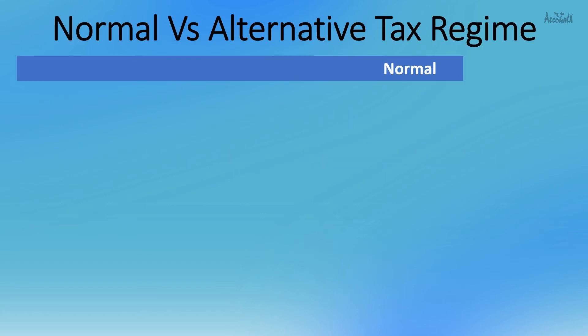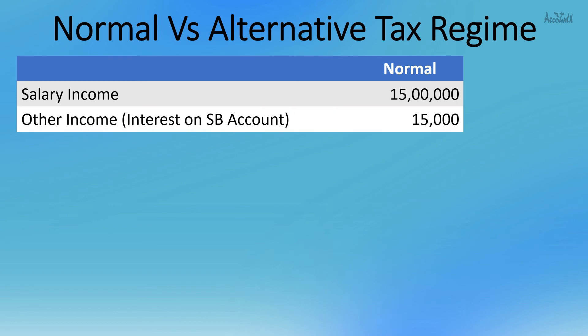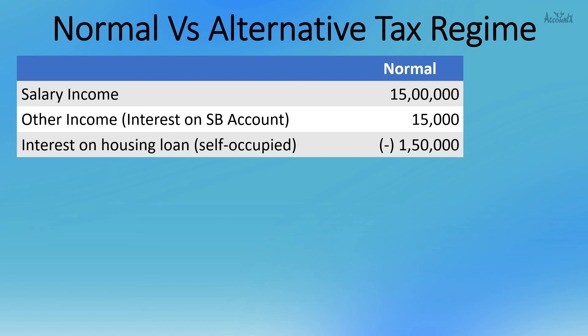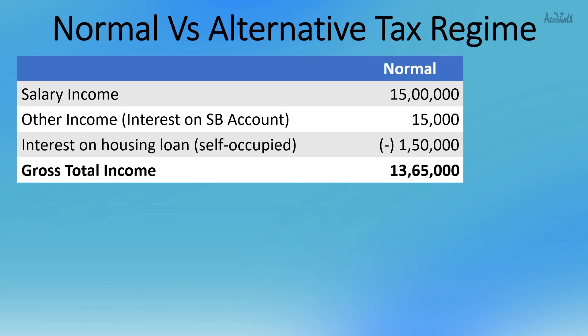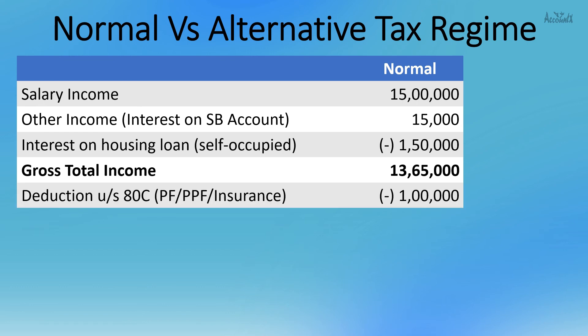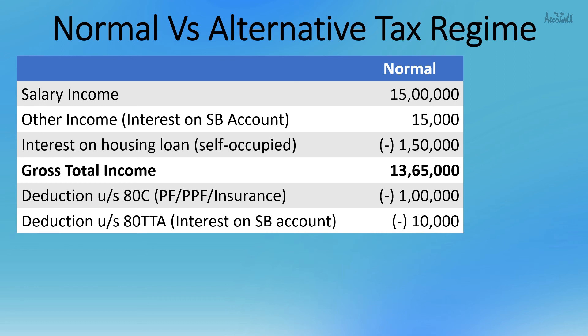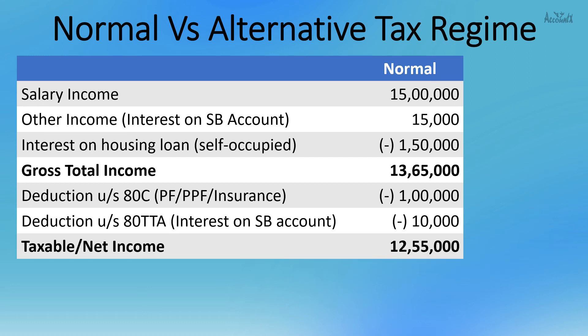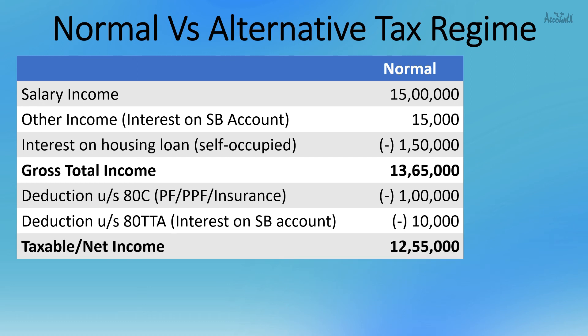Let us now do a comparison between the two tax regimes. Under the normal tax regime, with a salary income of 15 lakhs, other income of 15,000, and interest on housing loan for self-occupied property of 1,50,000, the gross total income is 13,65,000. After deduction under 80C of 1,00,000 and 80TTA of 10,000, the taxable income is 12,55,000, and income tax payable would be 1,96,560.